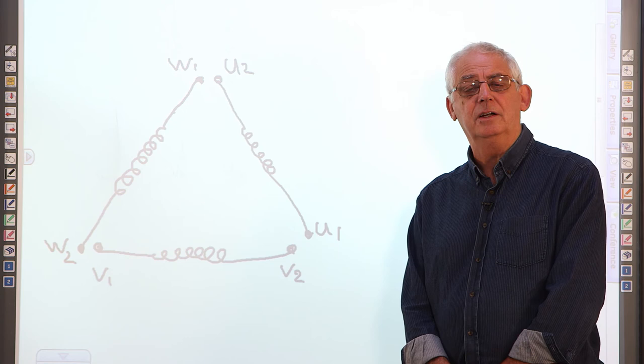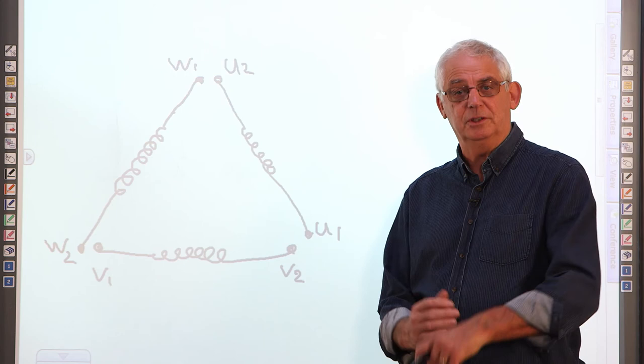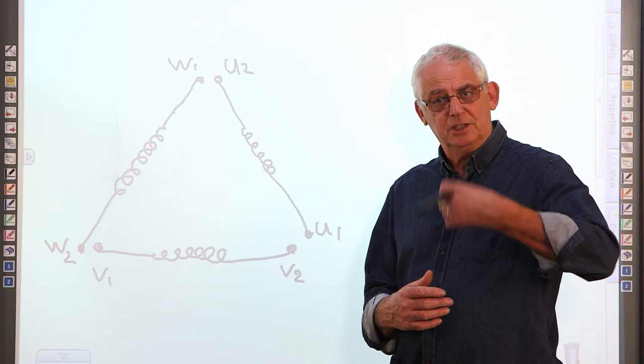The other thing is in delta, it will use more current. That's why often we start them in star because it starts up drawing less current. It changes to delta because once it starts running, it doesn't take so much energy to get the thing moving.